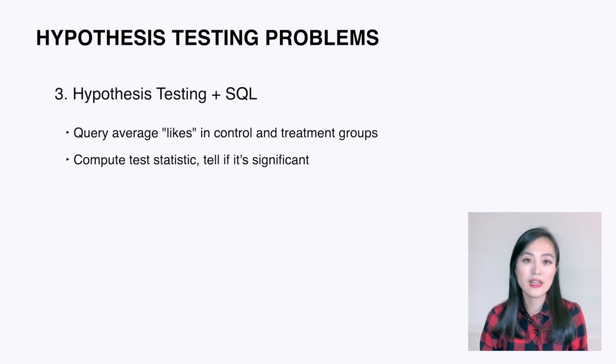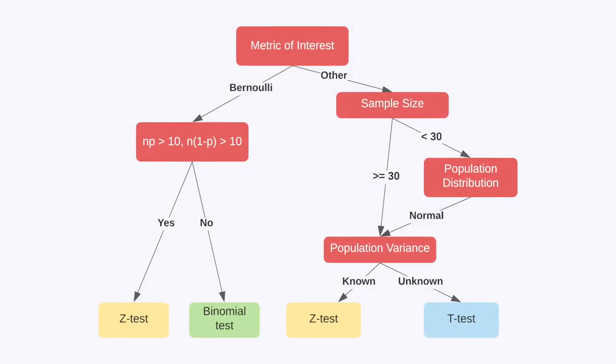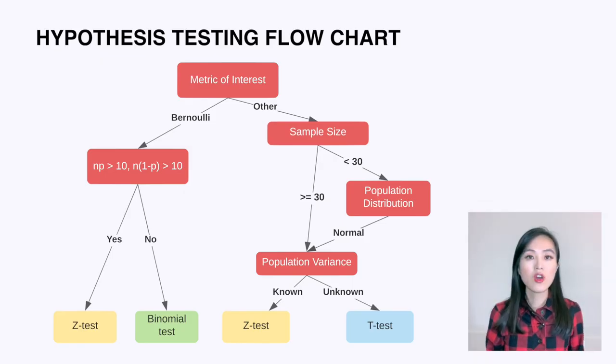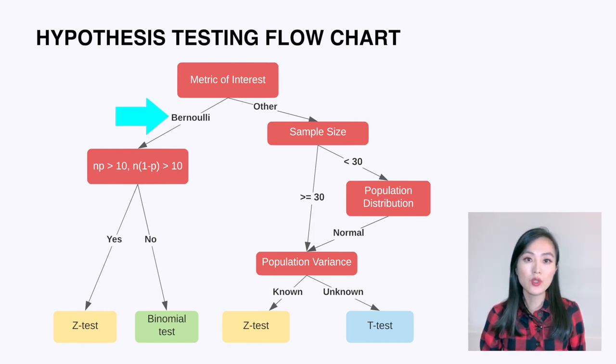The query itself is not difficult to write, but you will need to have a clear understanding of the formula to calculate the test statistic to solve the problem. Now you understand the three types of interview questions on hypothesis testing. Let's dive into when to use each test and what are the differences between them. I then realized it's easier to understand and explain those concepts if I just make a flowchart, so here it is. This chart summarizes when to use a particular test.